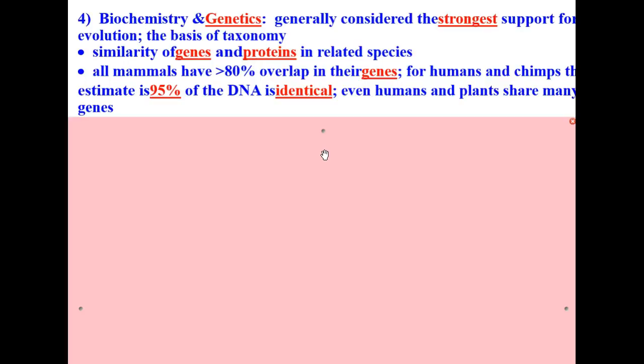Again, biochemistry and genetics considered the strongest support of the five pieces of evidence for evolution.